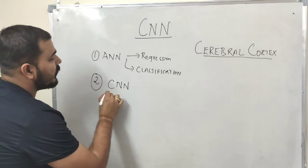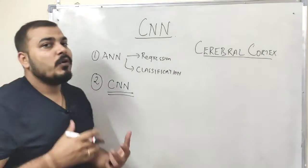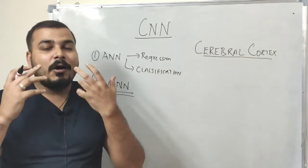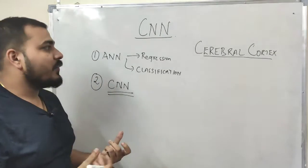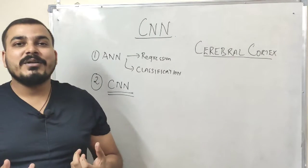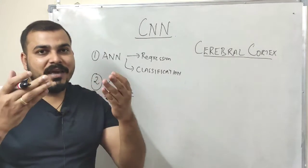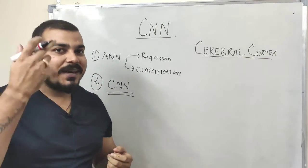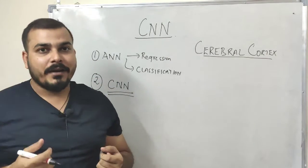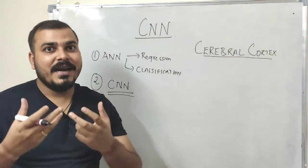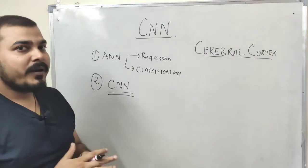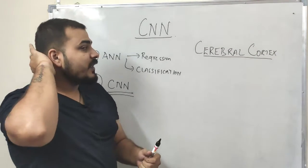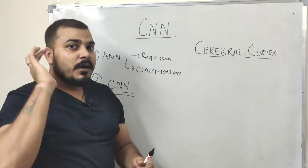Today's class will be mainly focusing about convolutional neural networks, but before understanding exactly what CNN is and how it works, we're going to see how image recognition is basically happening with respect to our human brain. We'll try to understand that first. In our human brain, in the back part of our head, in this particular region,